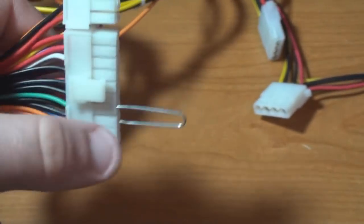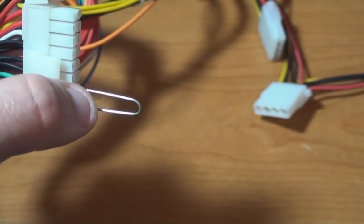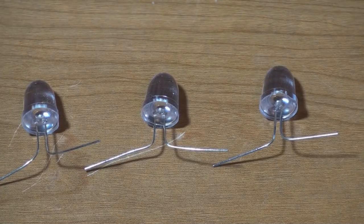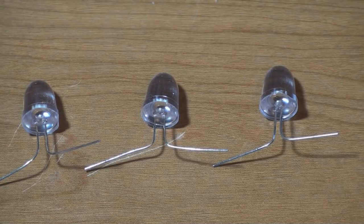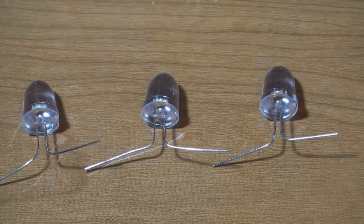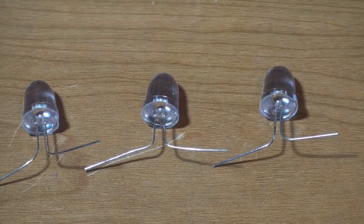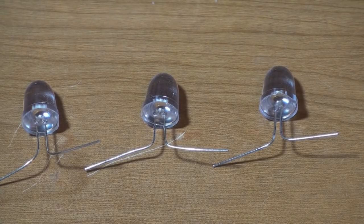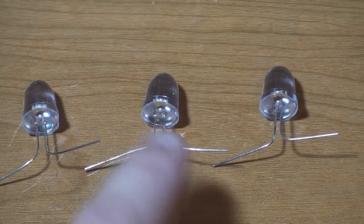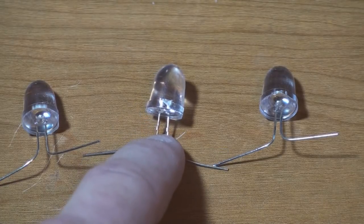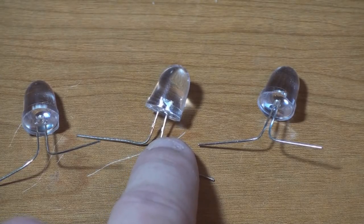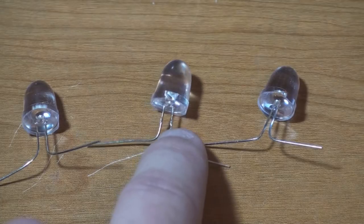The next thing you want to do is lay the LEDs on the table or whatever you're working on. Figure out which side is positive and which is negative. The shorter leg on the LED is the negative. Another way to tell is if you look inside the LED, you'll see that the right side of the LED is fatter than the left, so the right side is the negative side. That's the easiest way to tell.